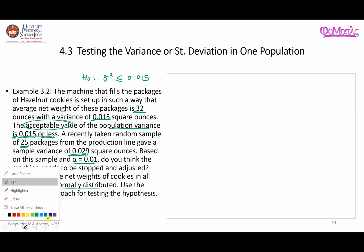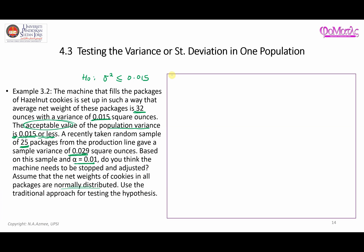Step one is to write down the null hypothesis and the alternative hypothesis. The null hypothesis is H₀: σ² ≤ 0.015. Based on that, the alternative hypothesis is the contradictory statement: H₁: σ² > 0.015.